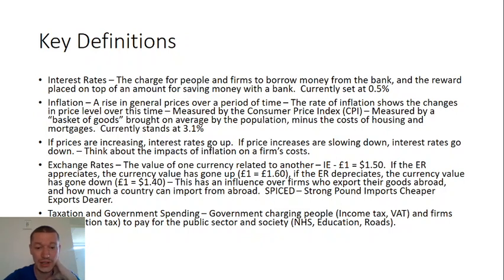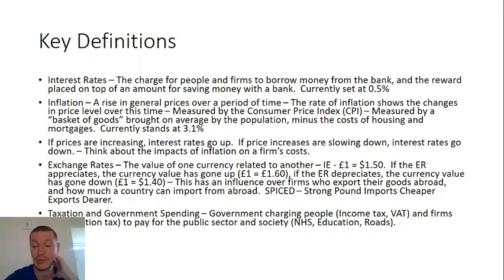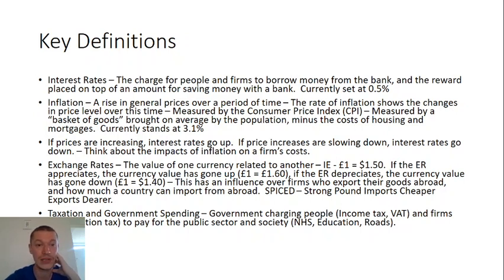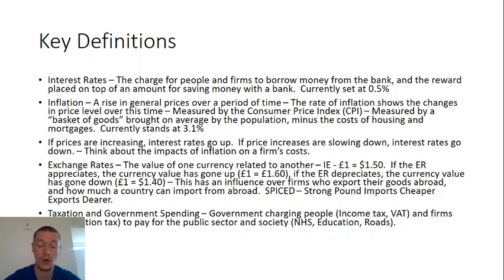The last thing we need to think about is taxation and government spending — the government charging people, for example, income tax and VAT. So I go to work, I pay my income tax; whenever I go to a shop, I pay value added tax — VAT. They will also charge firms corporation tax — a percentage of profits — to pay for the public sector: the NHS, education, roads, etc. So a lot of information there, and as I said, that's about as much as you need to know. Think about those key terms and the implications of these on business.